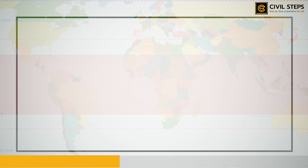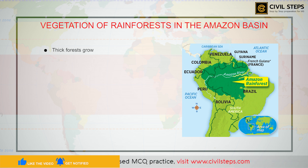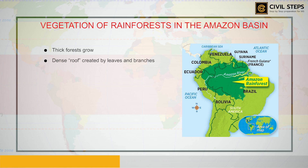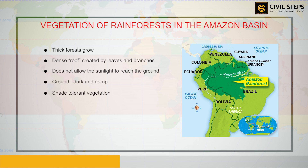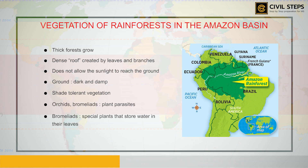As it rains heavily in this region, thick forest grows. The forests are so thick that the dense roof created by leaves and branches does not allow sunlight to reach the ground. The ground remains dark and damp, and only shade-tolerant vegetation may grow here. Orchids and bromeliads grow as plant parasites — bromeliads are special plants which store water in their leaves.